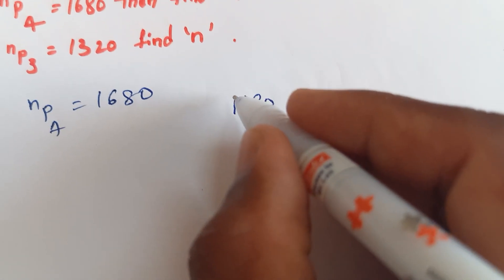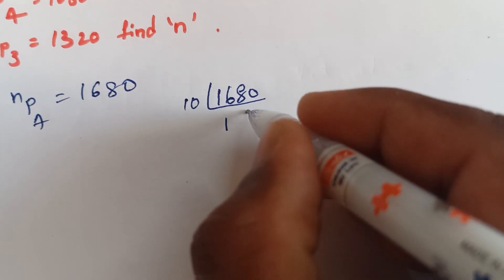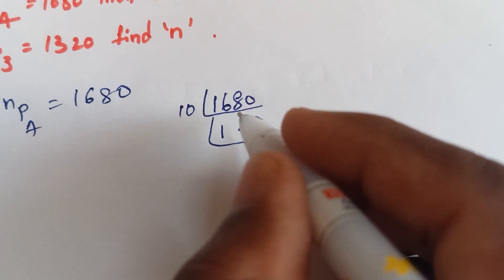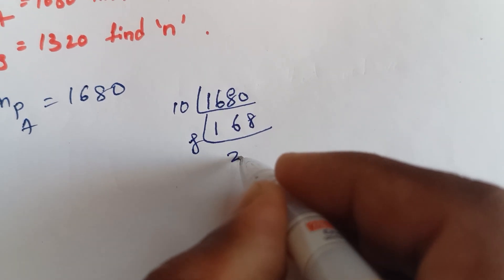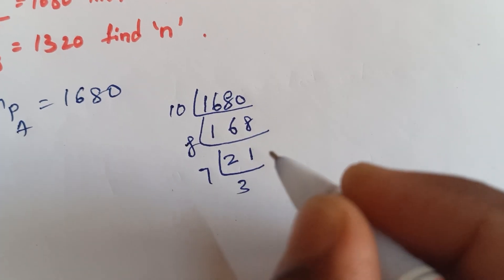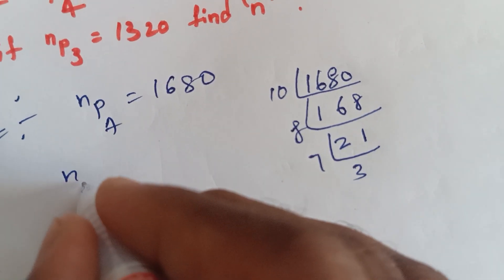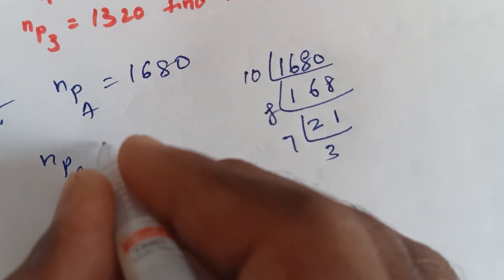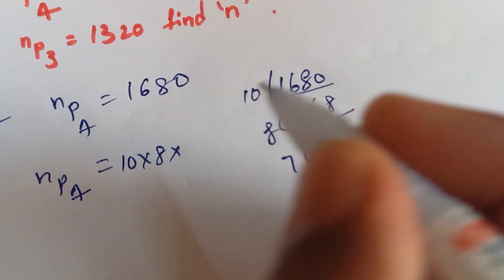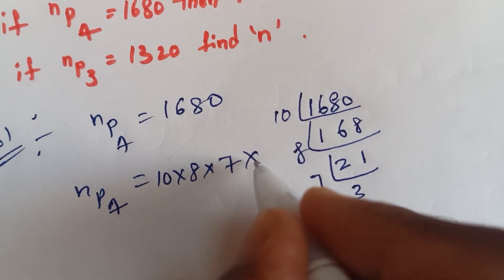So using LCM, NP4 equals to — working through the values: 10, 10, 7, 9, 8, 8, 7. So LCM NP4 equals to 10, 8, 7, 7, 3.